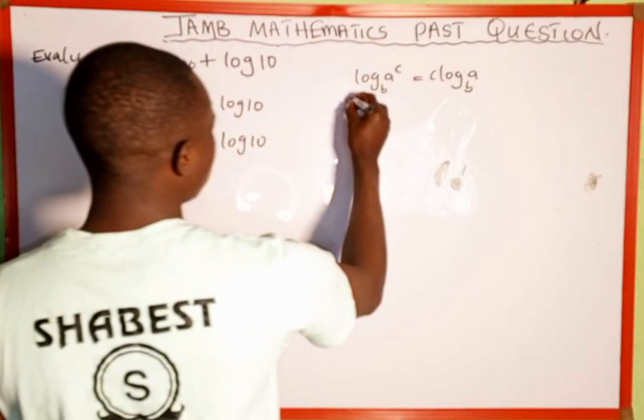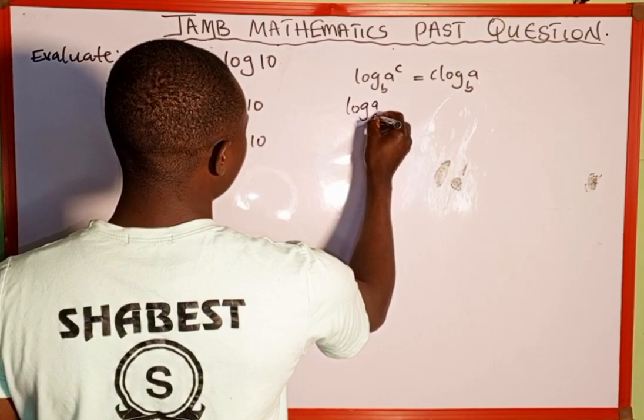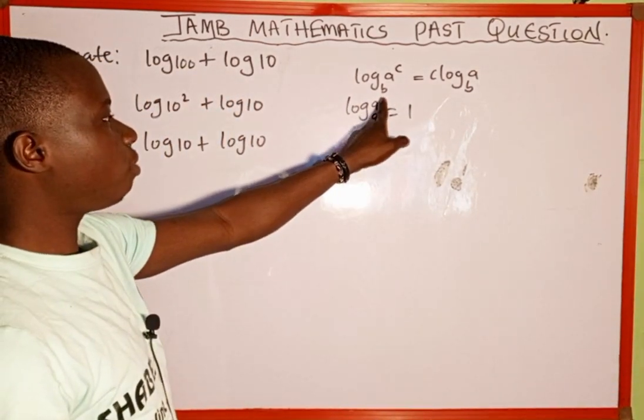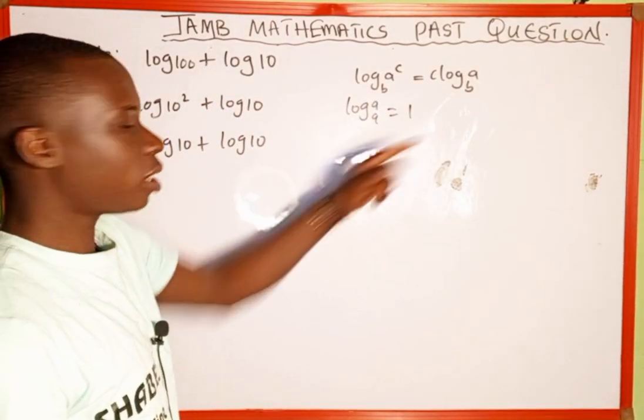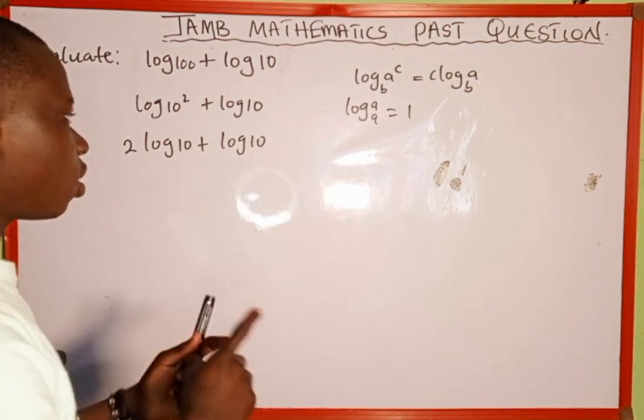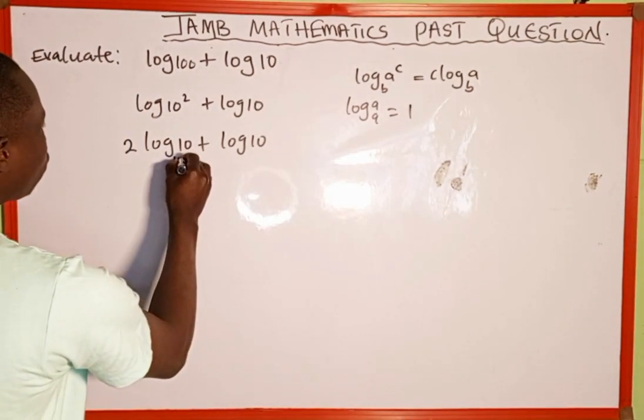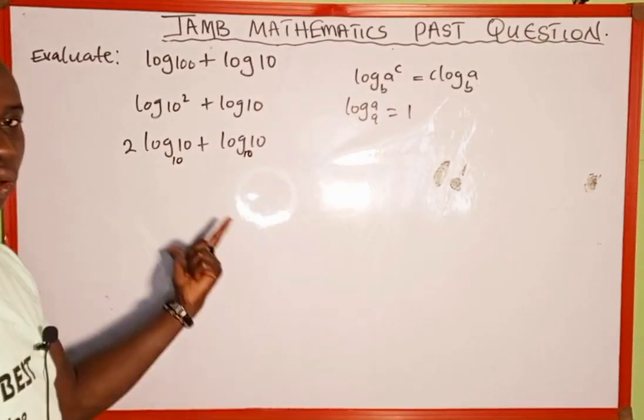Then the next thing we are going to recall is when we have log of a to base a, it is the same as 1. A logarithm of a number to its base is the same as 1. And here when you are given a logarithm without a base, that means it is to the base of 10.